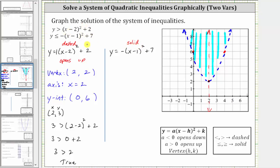Now we do the same for the second quadratic inequality, and then the solution to the system will be the double shaded region. Looking at the corresponding quadratic function for the second inequality, notice a is negative one, which means the parabola opens down this time. Now let's find the vertex, which is h comma k. Notice because we have x minus one in the parentheses, h is positive one. And because we have plus seven on the end, k is positive seven. And because the axis of symmetry passes through the vertex, the equation of the axis of symmetry is x equals positive one.